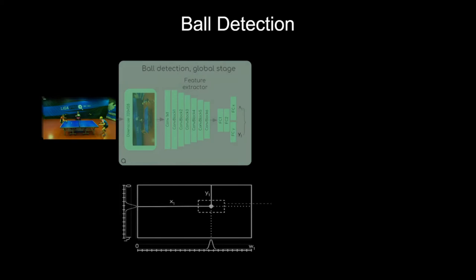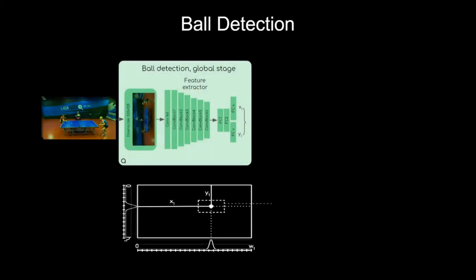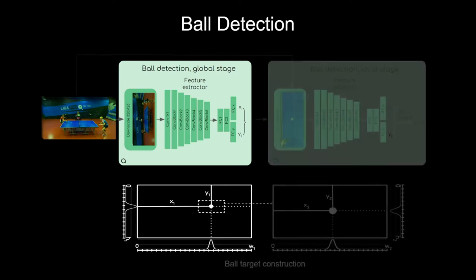The ball localization is performed by predicting its center on the last frame in the input stack. The target values are composed of two vectors, produced by a normal distribution fitted around the ball's center coordinate on the whole frame and in the local area around the ball.